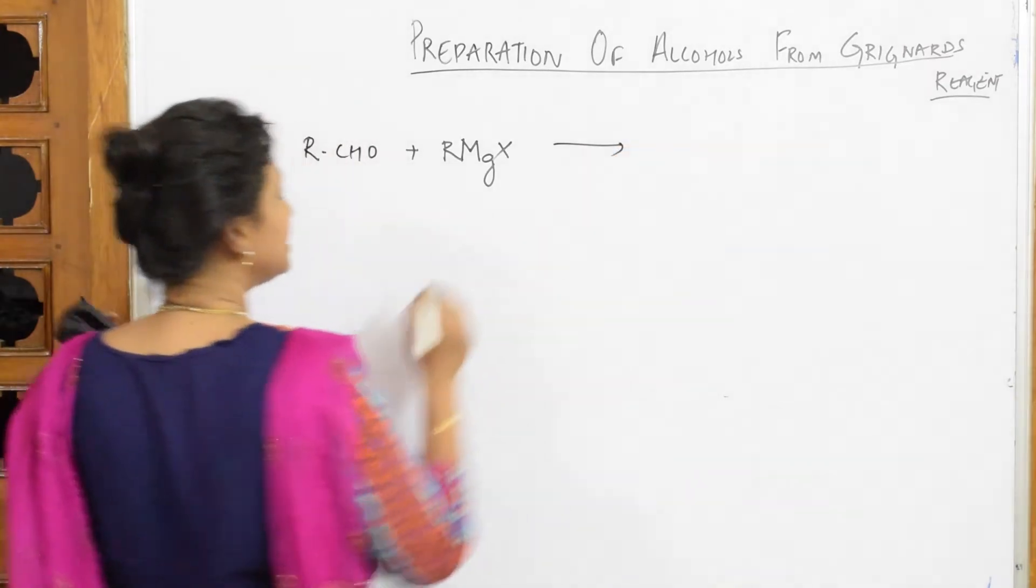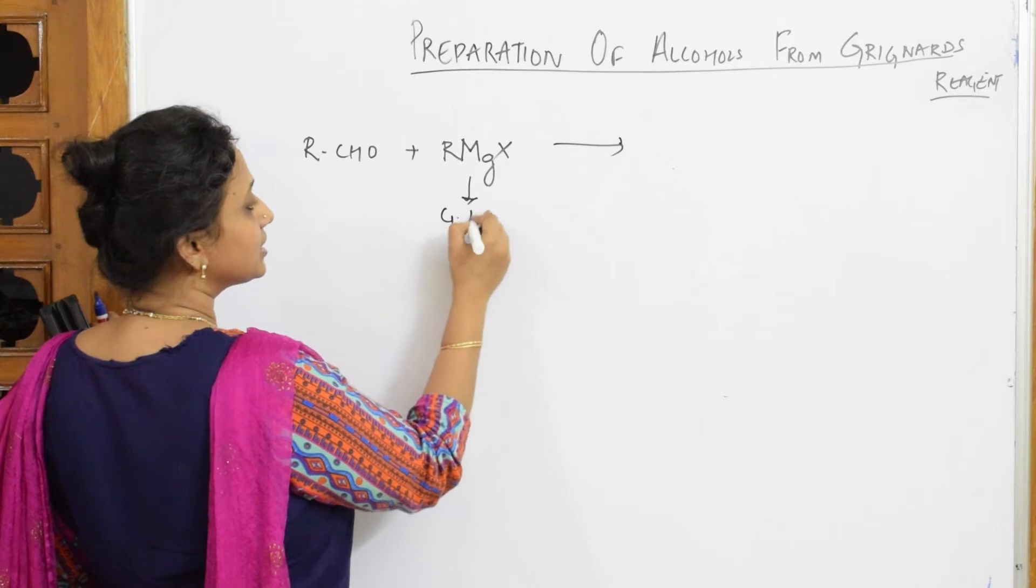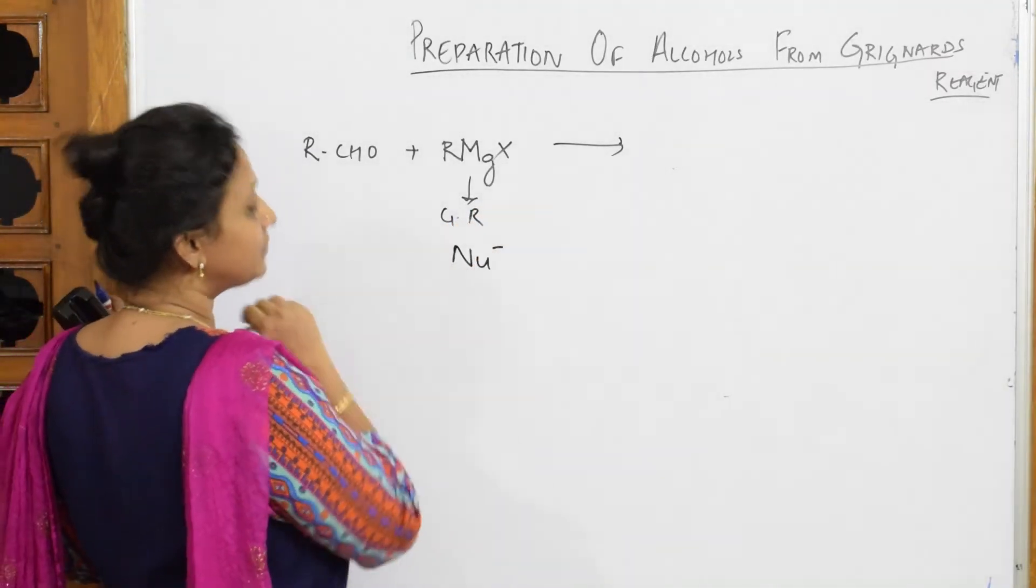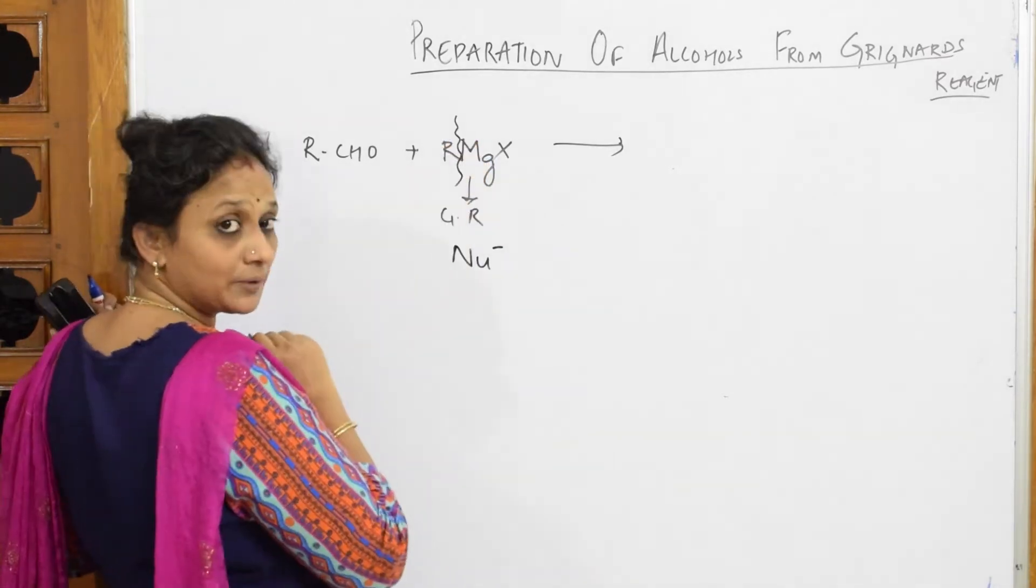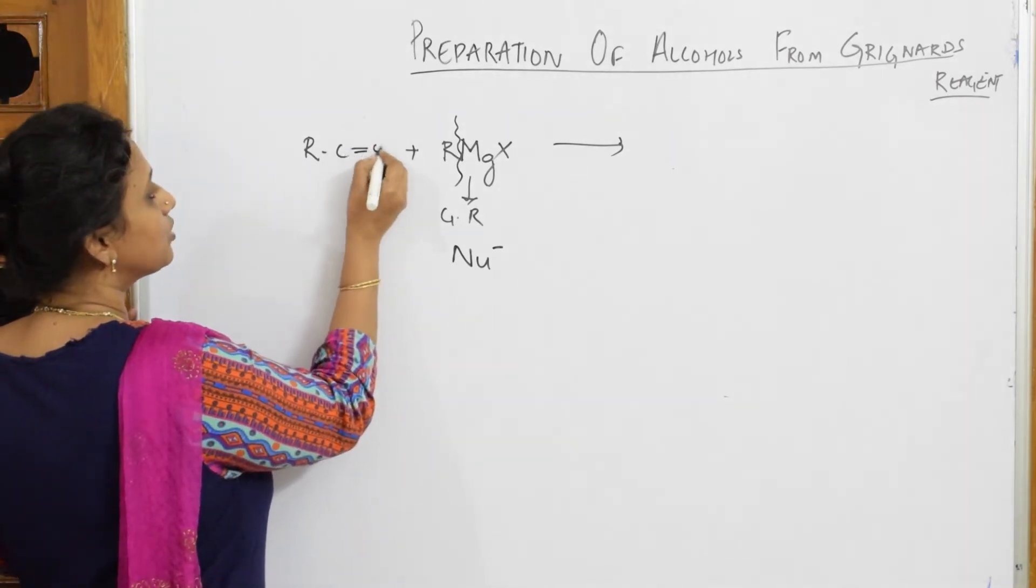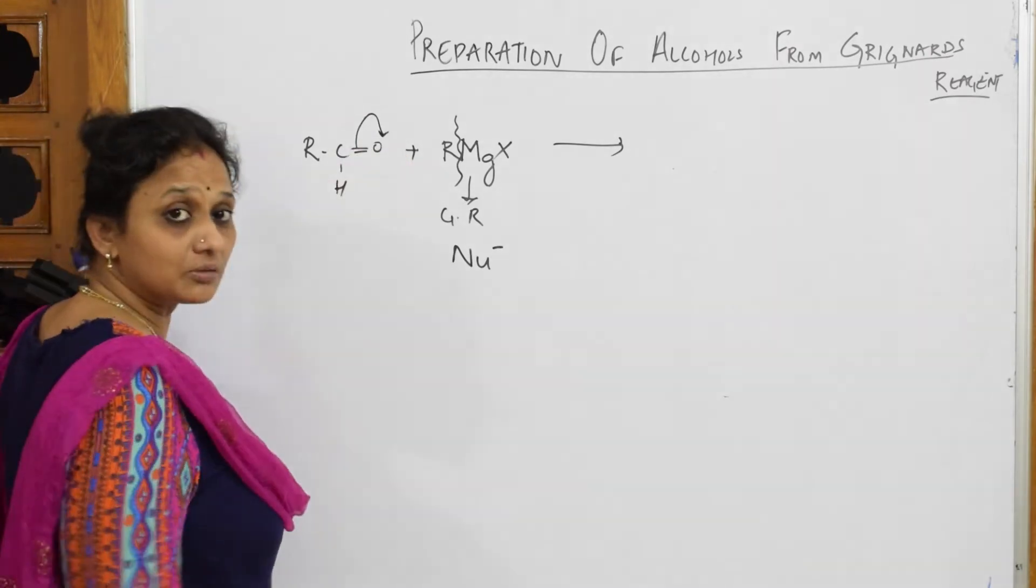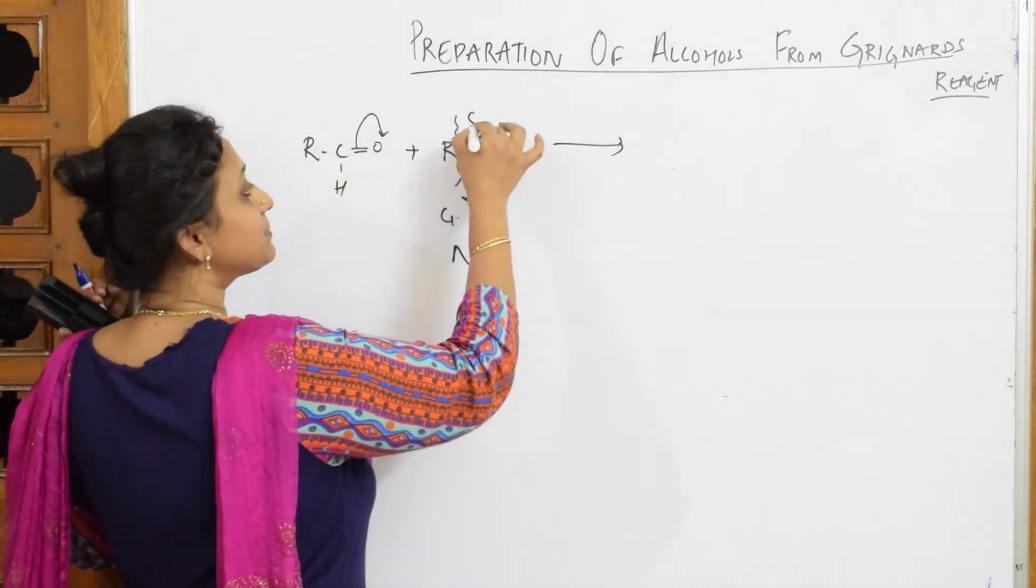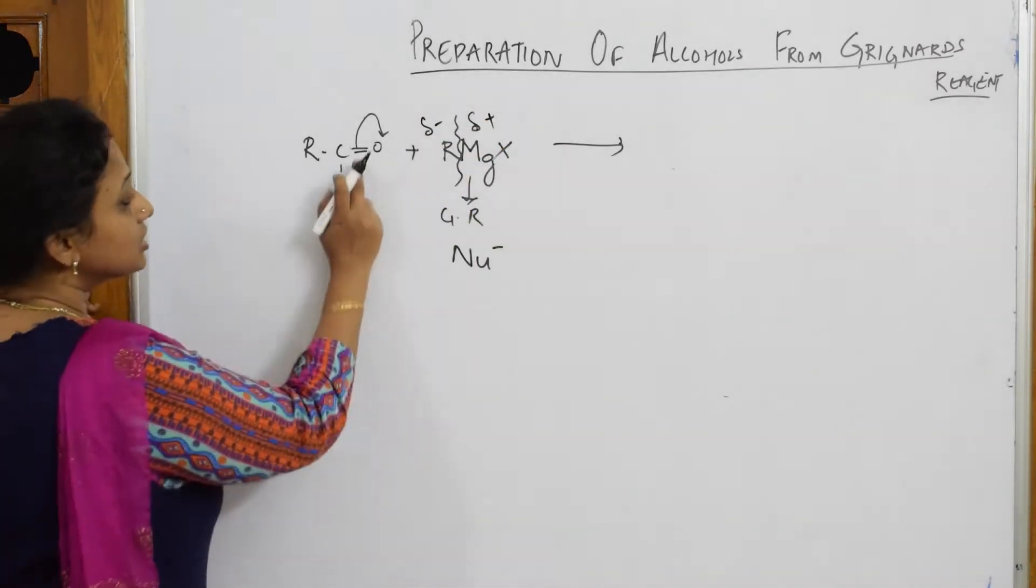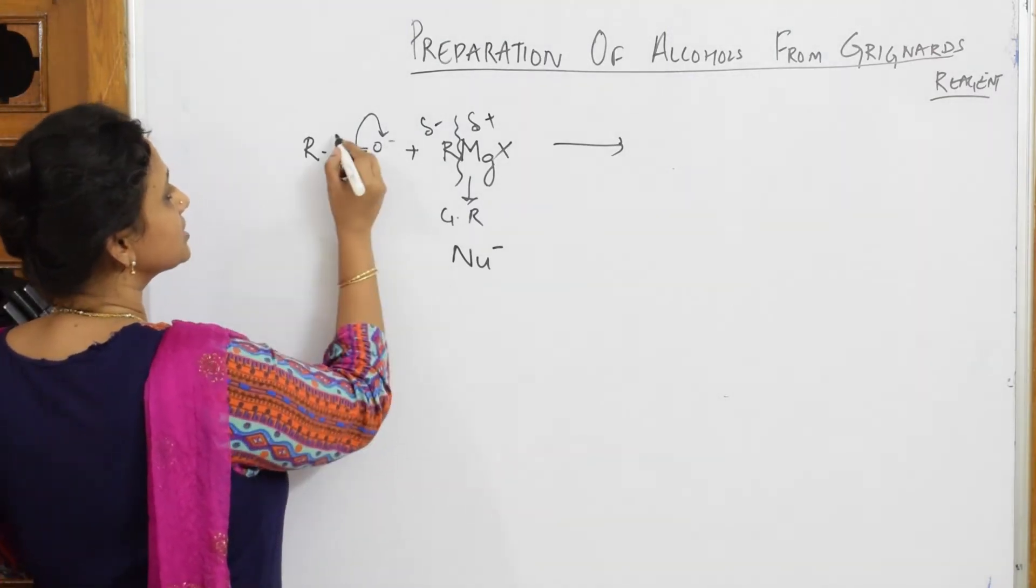So when I am adding this initially, just see Grignard's reagent. Now this is your Grignard's reagent. Grignard's reagent acts as a nucleophile. Remember that it acts as a nucleophile. So first there is a cleavage of bond. Here if I write this CHO, I am writing this as C double bond O, CH. Here there is a shift of double bond or cleavage. Magnesium attains a partial positive charge and alkyl group attains a partial negative charge.